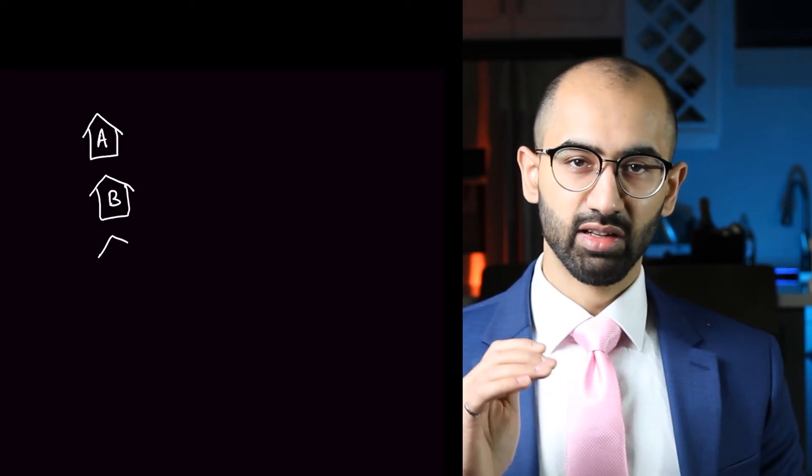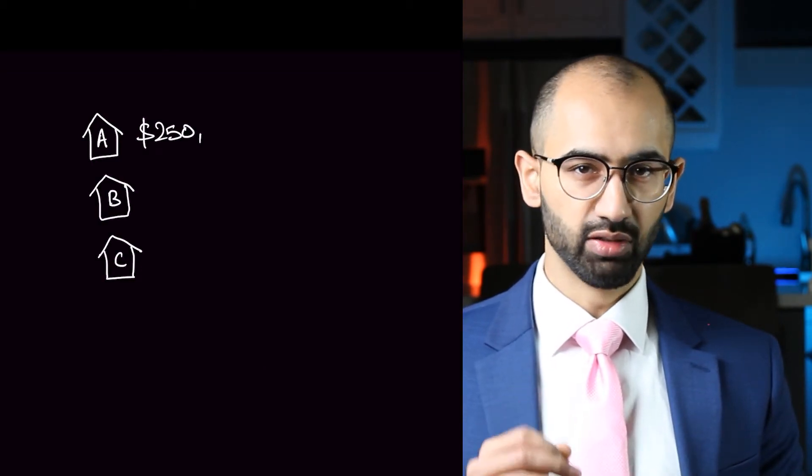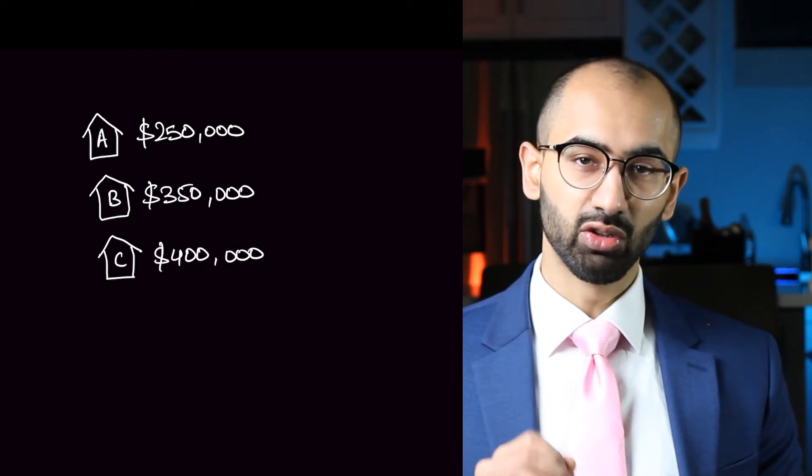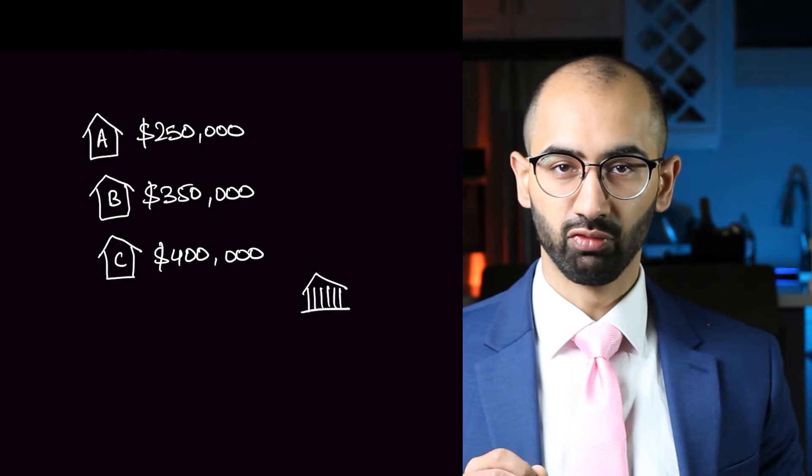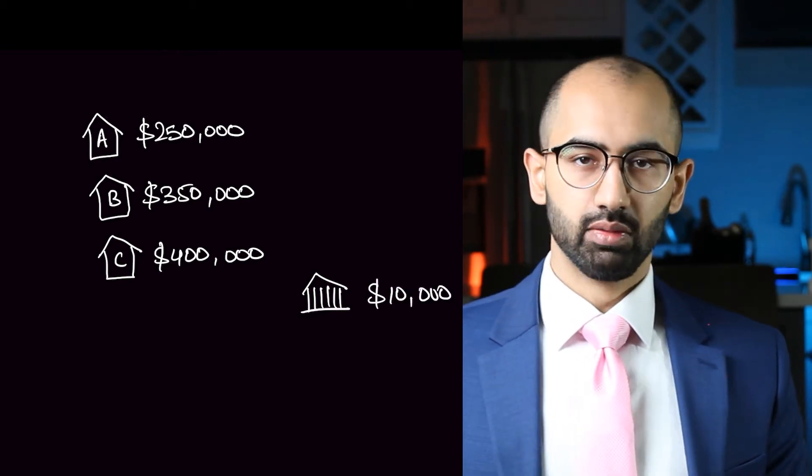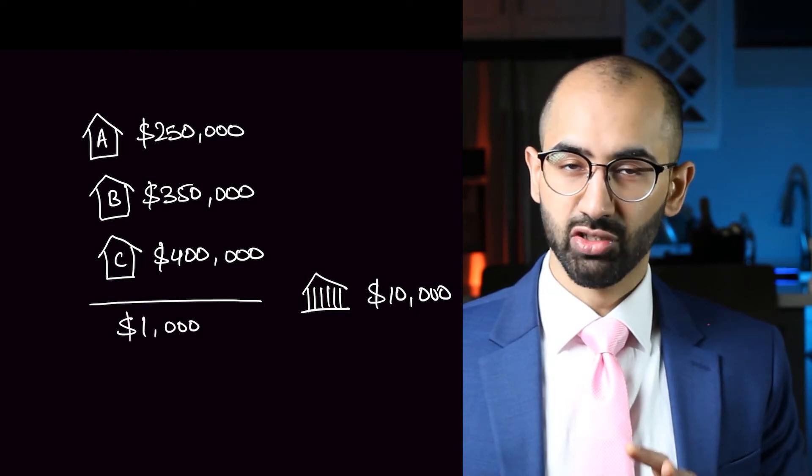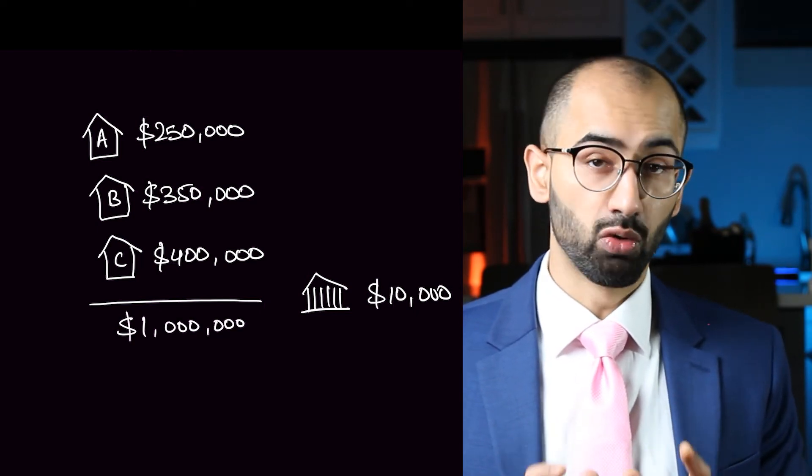Suppose there are only three houses in this neighborhood and they're worth $250,000, $350,000, and $400,000, and the government needs to collect $10,000 for the services that they provide. Now if we add up all the property values of all the houses in the neighborhood, which is only three here, we're going to get a total of $1 million.